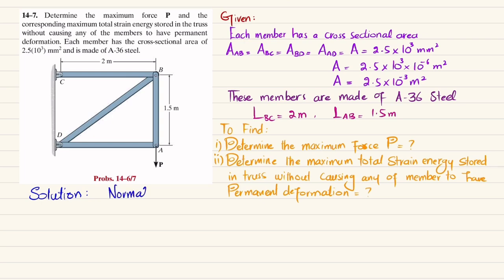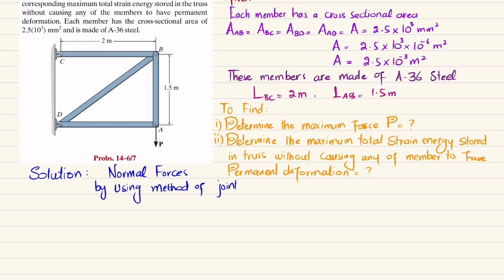The first step is to find the normal forces in each member of the truss using the method of joints. We will apply the equations of equilibrium at each joint. Let's take joint A, where the load P is applied.